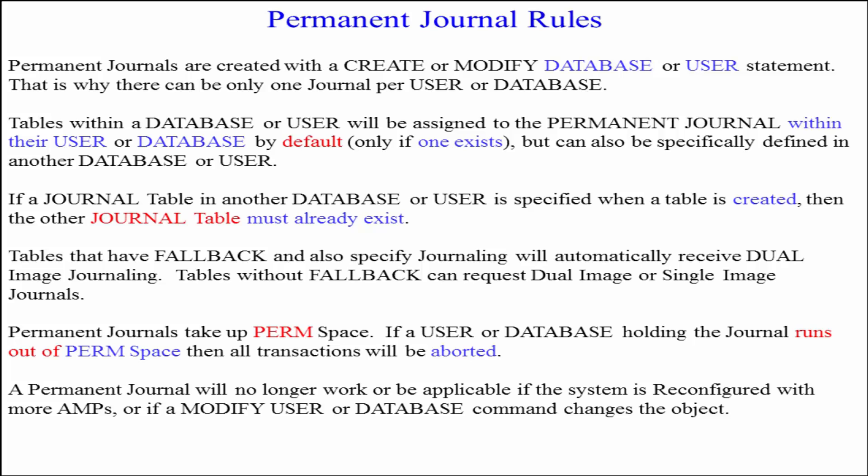Permanent journals take up perm space. If a user or database holding the journal runs out of perm space, then all transactions will be aborted. A permanent journal will no longer work or be applicable if the system is reconfigured with more AMPs, or if a MODIFY USER or DATABASE command changes the object.